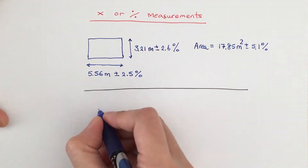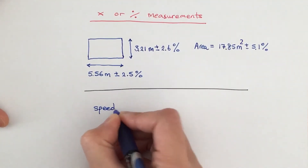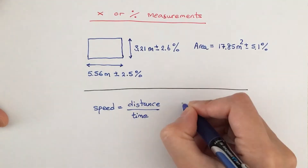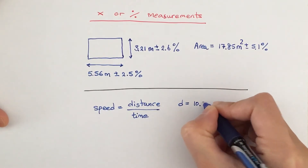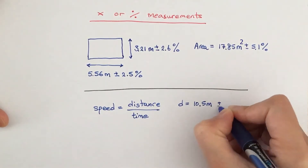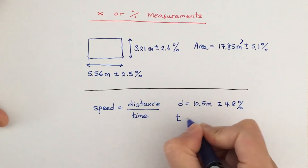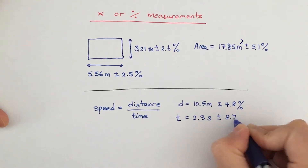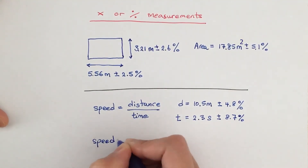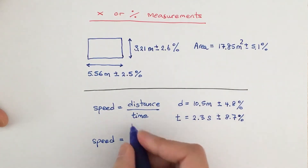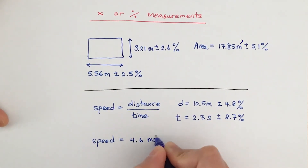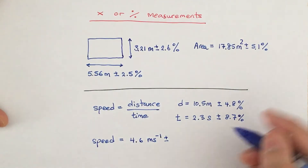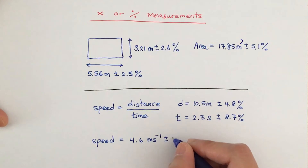For division, we have the equation: speed equals distance divided by time. Distance is given as 10.5 meters with a percentage uncertainty of 4.8%, and time is 2.3 seconds with 8.7% uncertainty. We carry out the calculation 10.5 divided by 2.3 to get 4.6 meters per second for our speed. Then we add their percentage uncertainties together to give the total percentage uncertainty in speed.